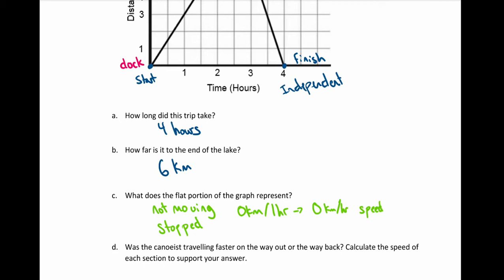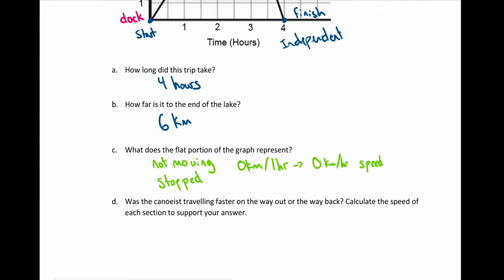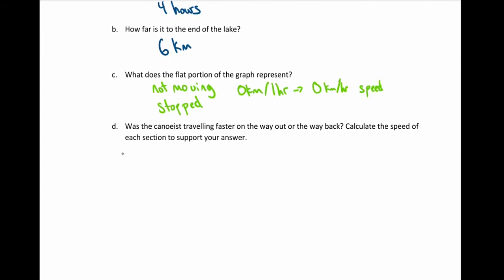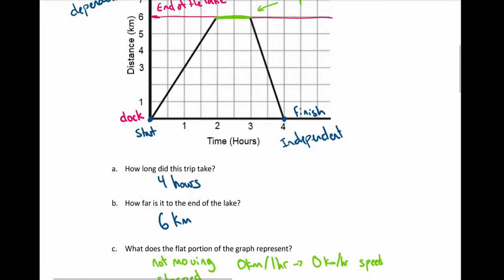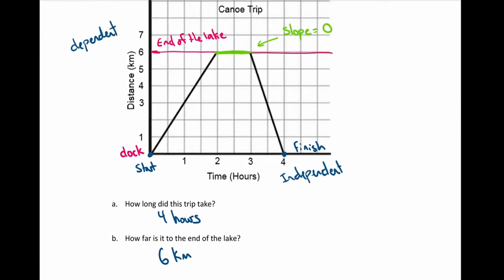Next, we want to know: is she traveling faster on the way out or on the way back? We'll calculate the speed of each section to support our answer. Speed — or velocity — is equal to distance over time, like kilometers per hour or meters per second. I'll label the three sections: A where they're leaving, B where they're not moving, and C where they're coming back.